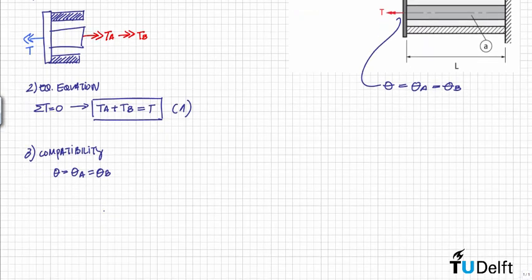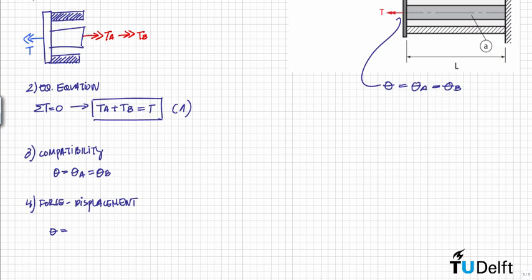So the compatibility equation we were looking for is: theta equals theta A equals theta B. Now we have one additional equation, but what we are really looking for is an equation which relates the torques TA and TB. Since this is a relationship between angles, we can use the force-displacement relationship — specifically the torsion formula — to find that equation.